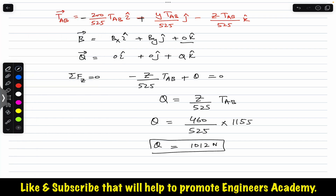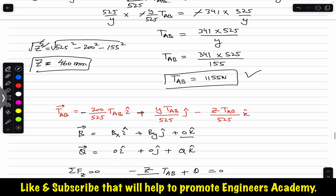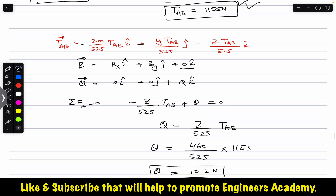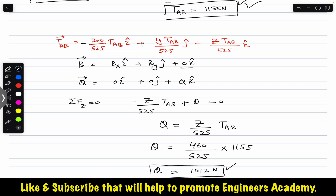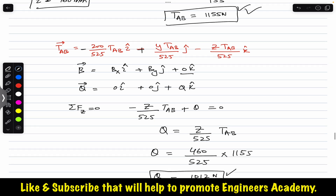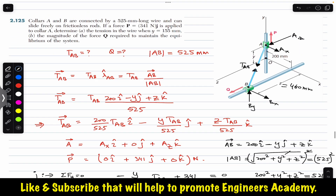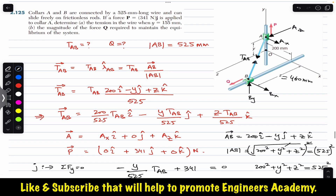So the tension in cable AB is 1155 newtons, and the force Q applied to collar B is 1012 newtons. I hope this helps in your learning. Let me know in the comments, and do subscribe to Engineers Academy for solutions to more problems from Engineering Statics by Beer & Johnston.